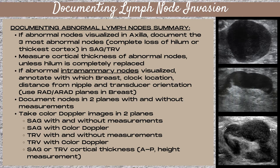For abnormal intramammary nodes — nodes within the breast — annotate with which breast (right or left), the clock location, the distance from the nipple, and the transducer orientation, and use radial and anti-radial planes. Otherwise, follow the same protocol as axillary lymph nodes: two planes with and without measurements, color Doppler in both planes. The sequence is: sagittal with and without measurements, sagittal with color Doppler, transverse with and without measurements, transverse with color Doppler, then a cortical thickness measurement — the AP, anterior-posterior or height measurement — in either plane.